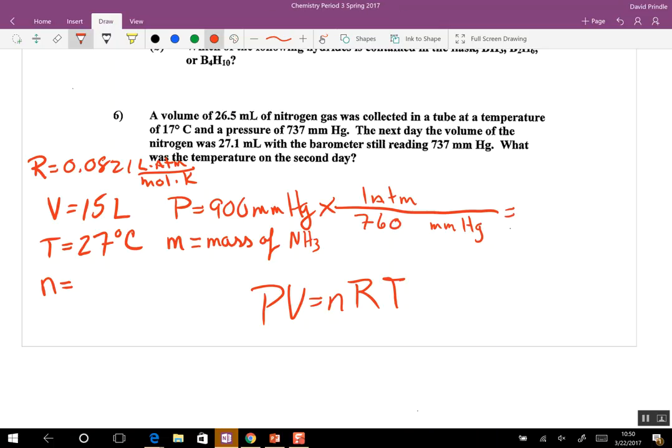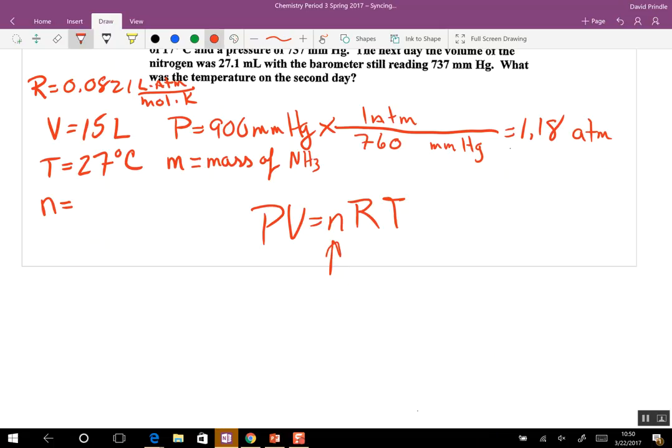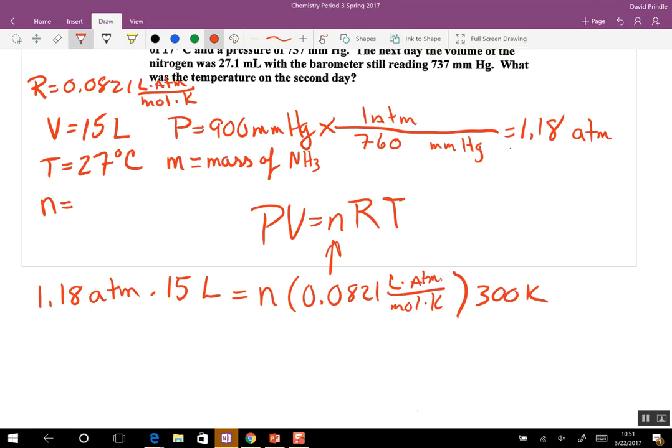Seven hundred and sixty. So what's 900 divided by 760? It's going to be one point something, right? One point one eight. So you're going to solve for N. You're going to drop everything in. 1.18 atmospheres times 15 liters equals N times 0.0821 liters atmospheres mol Kelvin. I switched the units around, it's still the same ones. Times 27 degrees C, which is 300 degrees Kelvin.